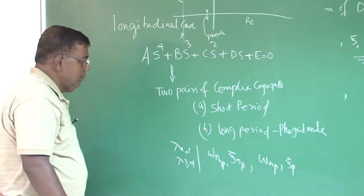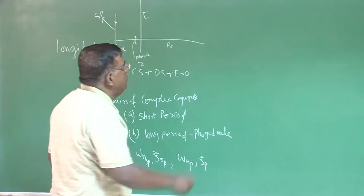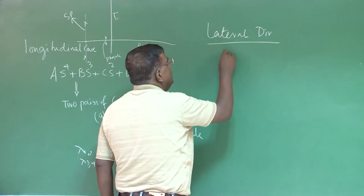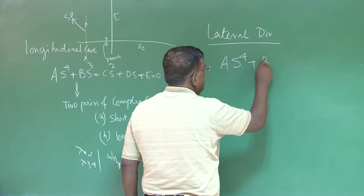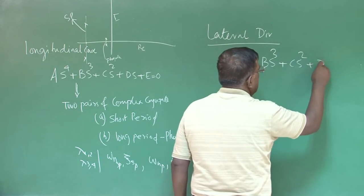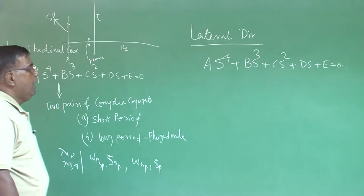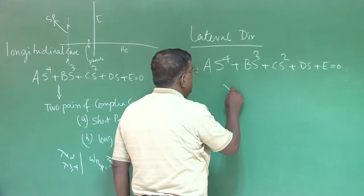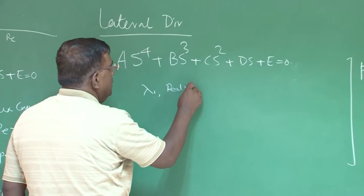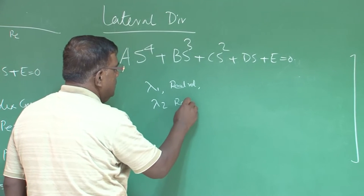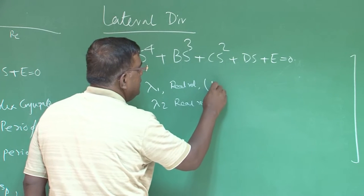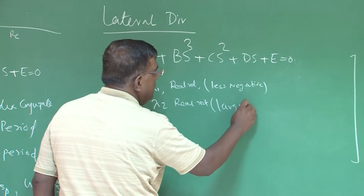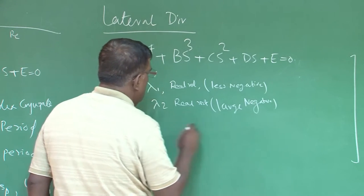Second, we have gone to lateral directional case, there also we got equation of the form A s^4 plus B s^3 plus C s^2 plus D s plus E equal to 0 and interestingly, once we solve this equation numerically for most of the airplane, roots are typically like this, one real root, another real root, this is real part is very less negative or sometime marginally positive, this is large negative and another complex conjugate.